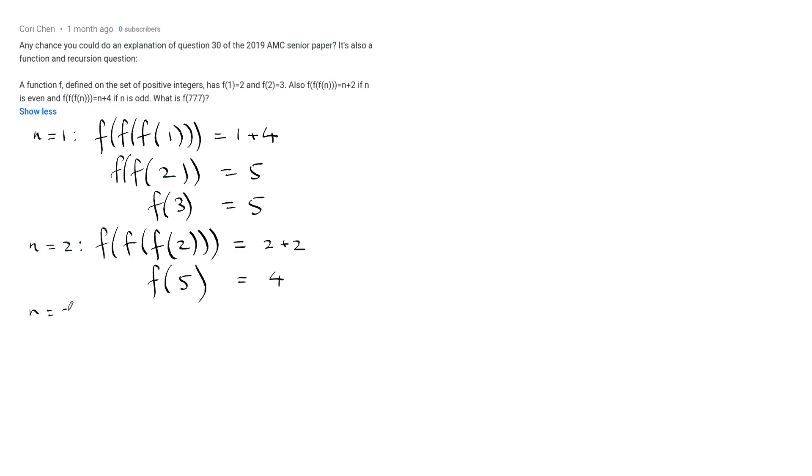Alright, and then maybe we try n equals 3. So f of f of f of 3, and we use the odd rule so 3 plus 4. And we've got f of 3 was 5 and f of f of 5 was 4, so this is f of 4.